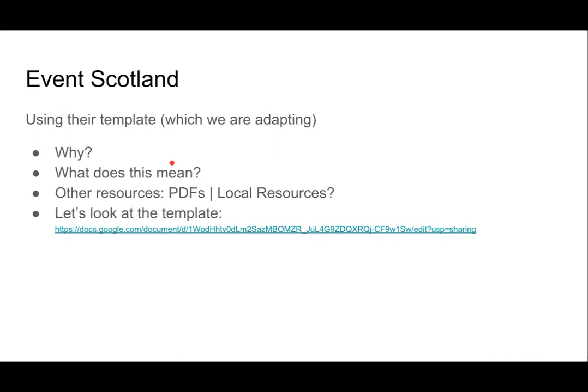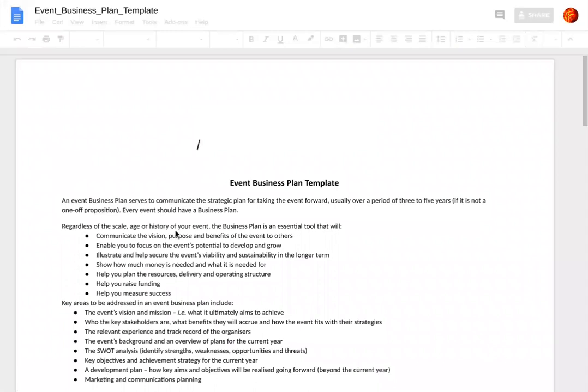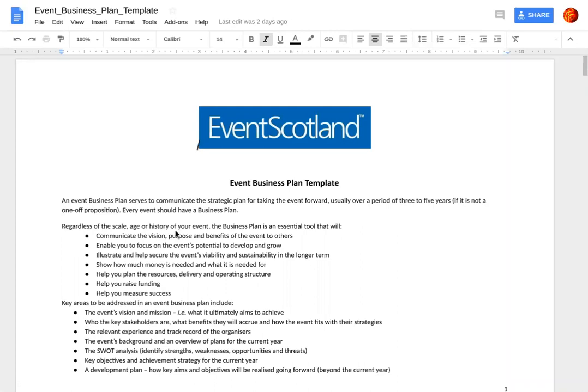So what is EventScotland and why are we talking about them? They are a group in Scotland, part of the United Kingdom, and they have put out a tremendous amount of resources to help local people create and produce events. They offer both a business plan template and a marketing plan template — and these templates are specific for event businesses or event marketing, not generic business templates. I have the link here. This is a Google Doc; we'll be using Google Docs extensively in this course. The document is laid out in landscape mode — wider pages.